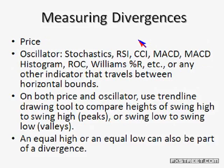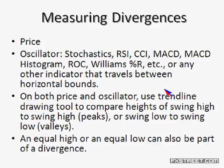What are the ways we measure divergence? Obviously price — you'll always see price as the main aspect of your charts. For the oscillator, you can use stochastics, RSI (relative strength index), CCI (commodity channel index), MACD, MACD histogram, rate of change, Williams percent R, or any other indicator that travels between horizontal bounds — which is what's usually called an oscillator. On both price and the oscillator, we use trend line drawing tools to compare heights of swing high to swing high, or swing low to swing low. An equal high or equal low can also be part of a divergence.